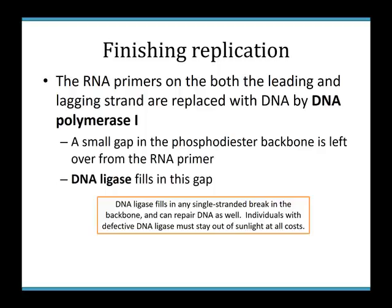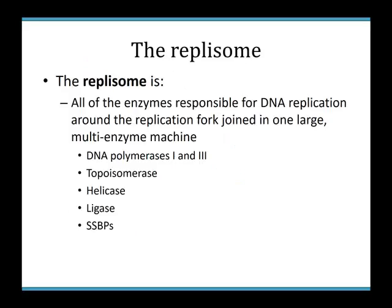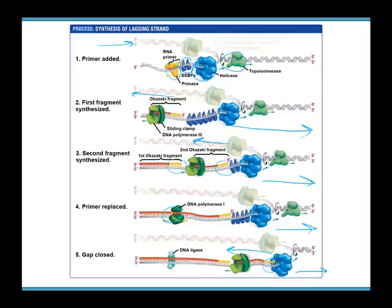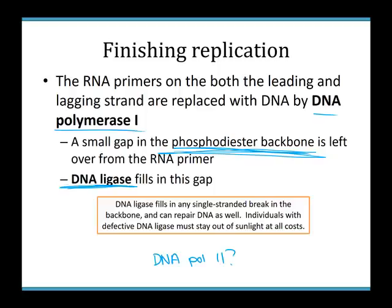The enzyme that removes the RNA primers is DNA polymerase 1 — so we have DNA polymerase 3 as the main one, and DNA polymerase 1 to remove primers. What happened to DNA polymerase 2? It turns out DNA polymerase 2 is involved in DNA repair. When DNA polymerase 1 replaces those RNA primers with DNA, it leaves a small gap in the phosphodiester backbone that has to be sealed with a single covalent bond.